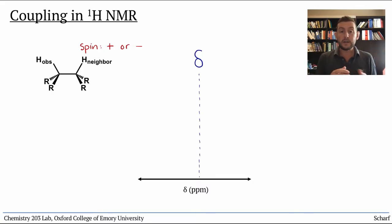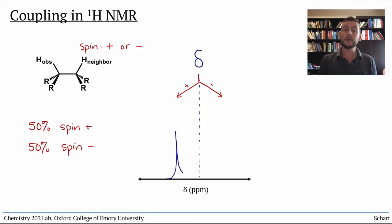So in a sample of this molecule, about 50% of the observed protons will have a neighbor that's spin up and absorb slightly higher frequency photons, while the other 50% will have a neighbor that's spin down and they'll absorb slightly lower frequency photons. We end up with a pair of peaks called a doublet.